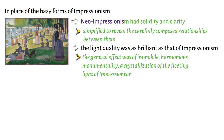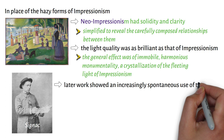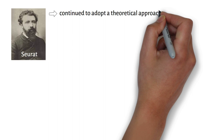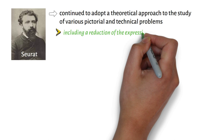Signac's later work showed an increasingly spontaneous use of the Divisionist technique, which was more consistent with his poetic sensibility. Seurat, however, continued to adopt a theoretical approach to the study of various pictorial and technical problems, including a reduction of the expressive qualities of colour and form to scientific formulas.